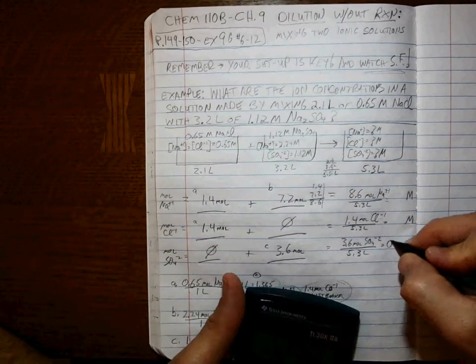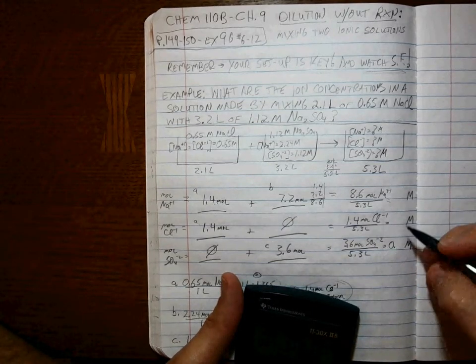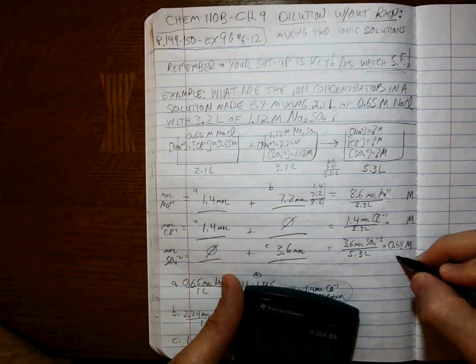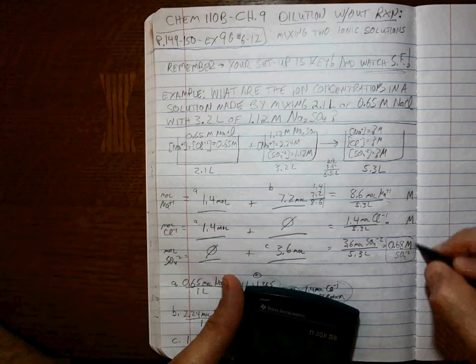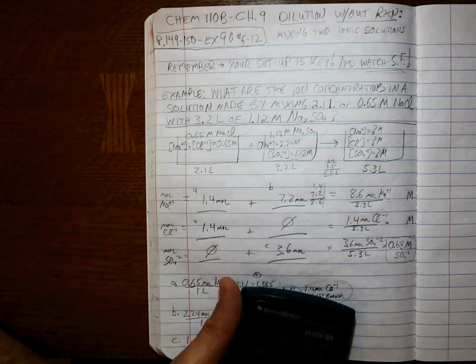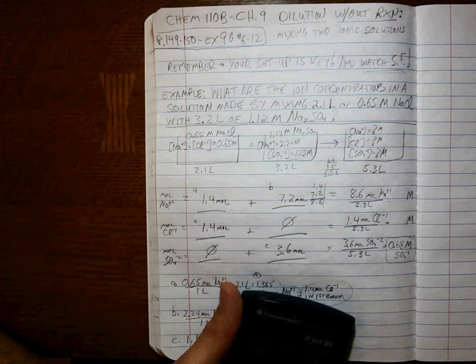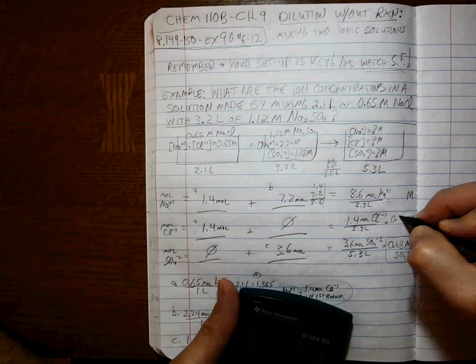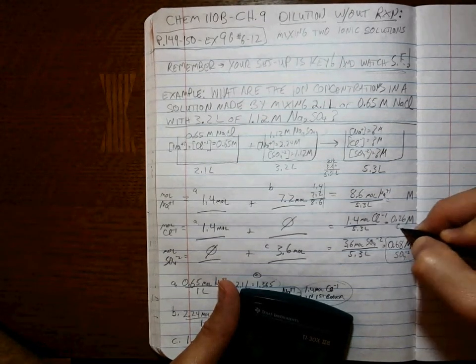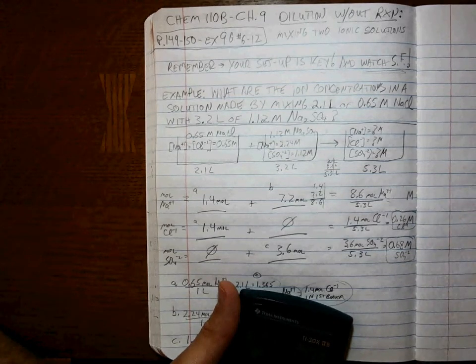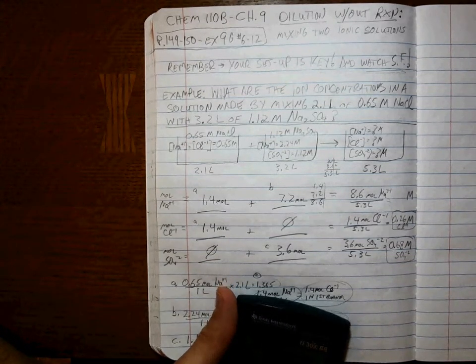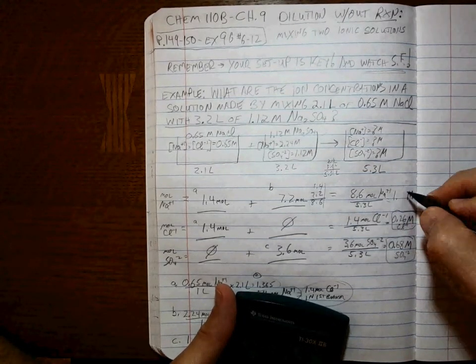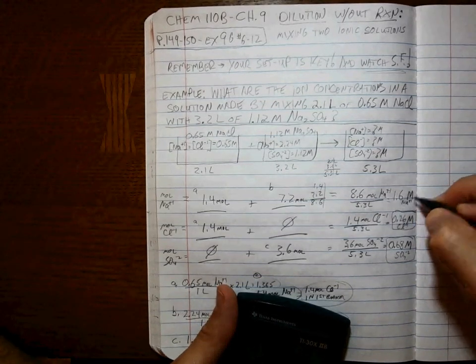All right. Without rounding, that's 0.68 molar sulfate ion. Yours might be a little bit different in that last sig fig. No worries. 1.4 divided by 5.3 is 0.26 molar chloride ion at the end. And the concentration of the sodium ion is 8.6 divided by 5.3 or 1.6 molar sodium ion.